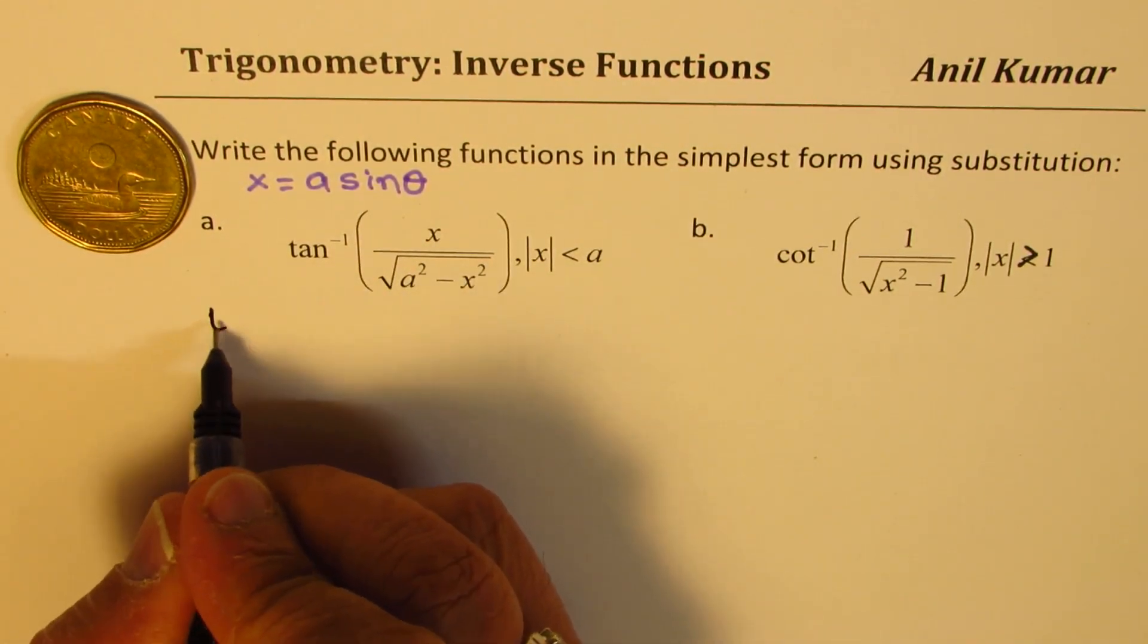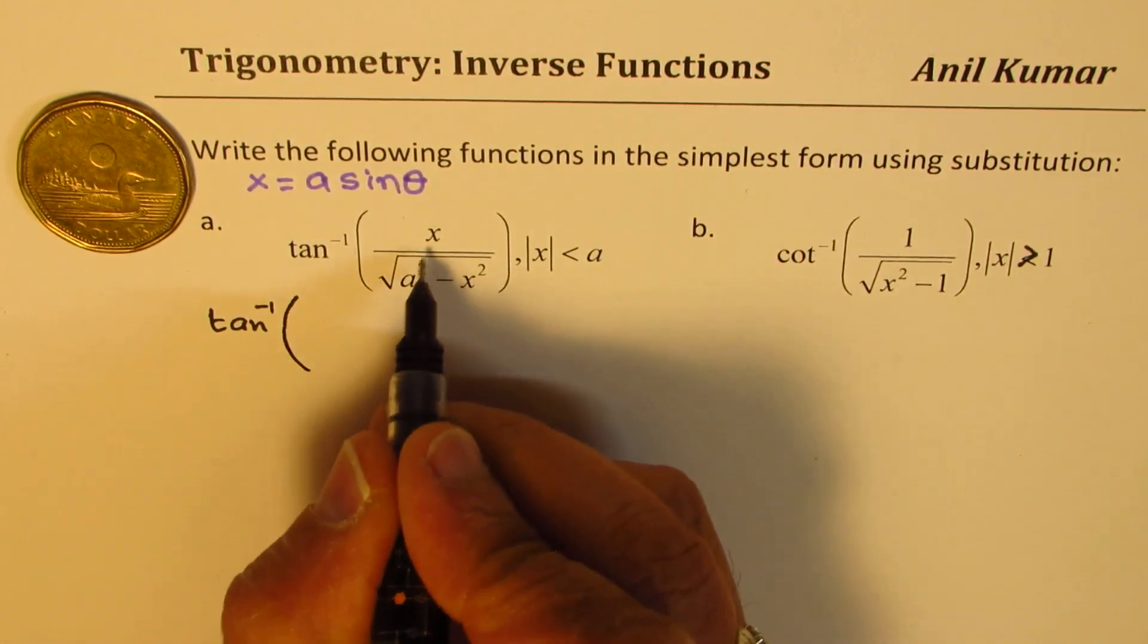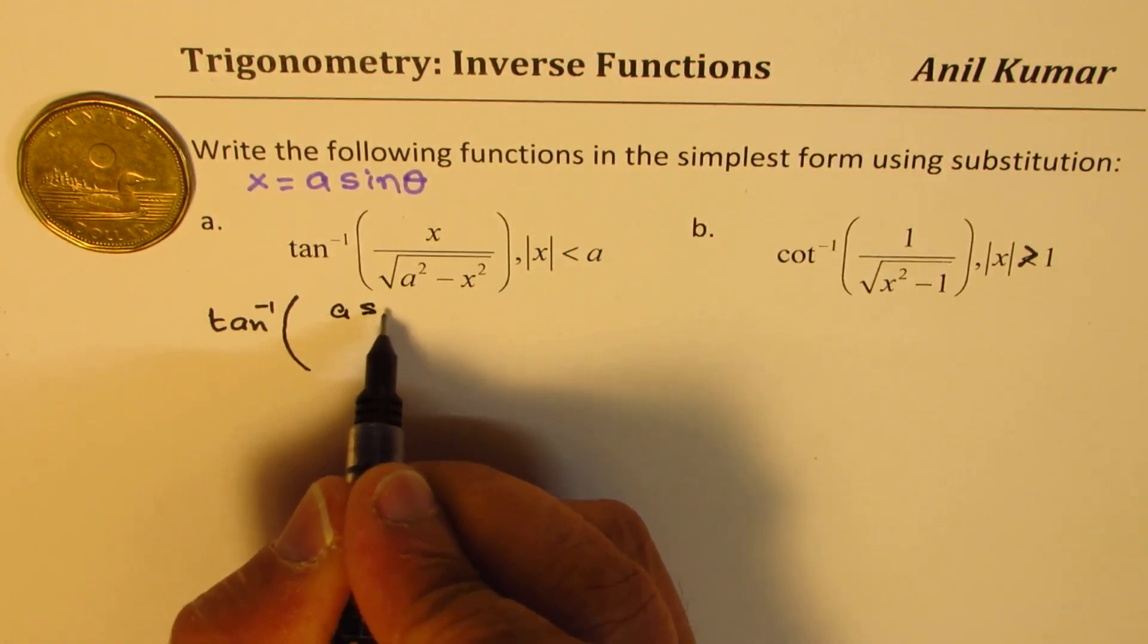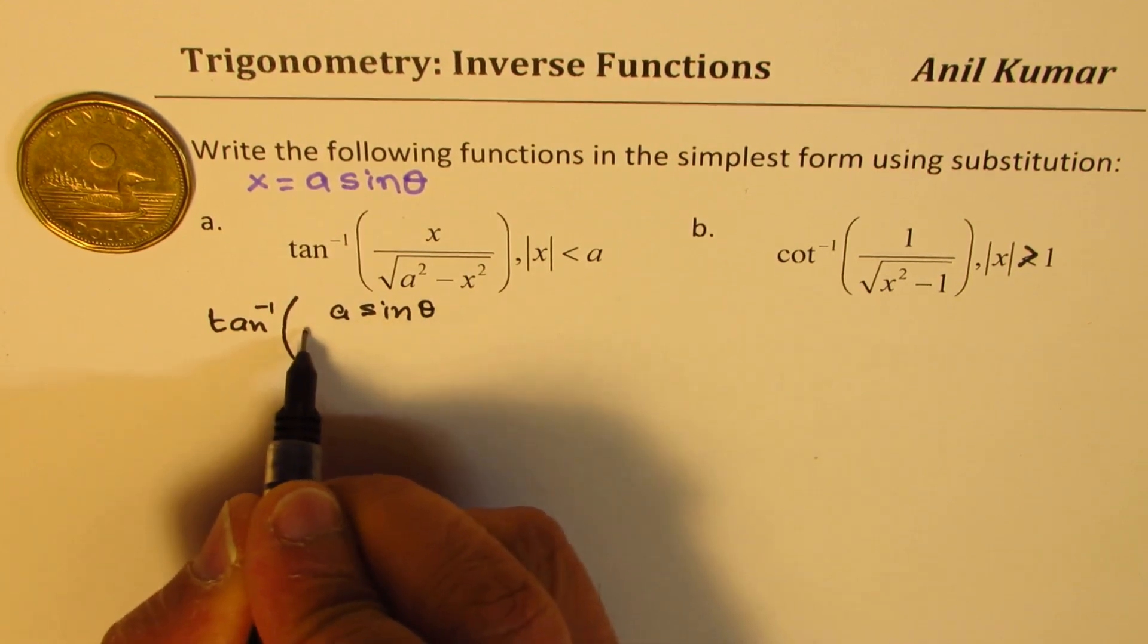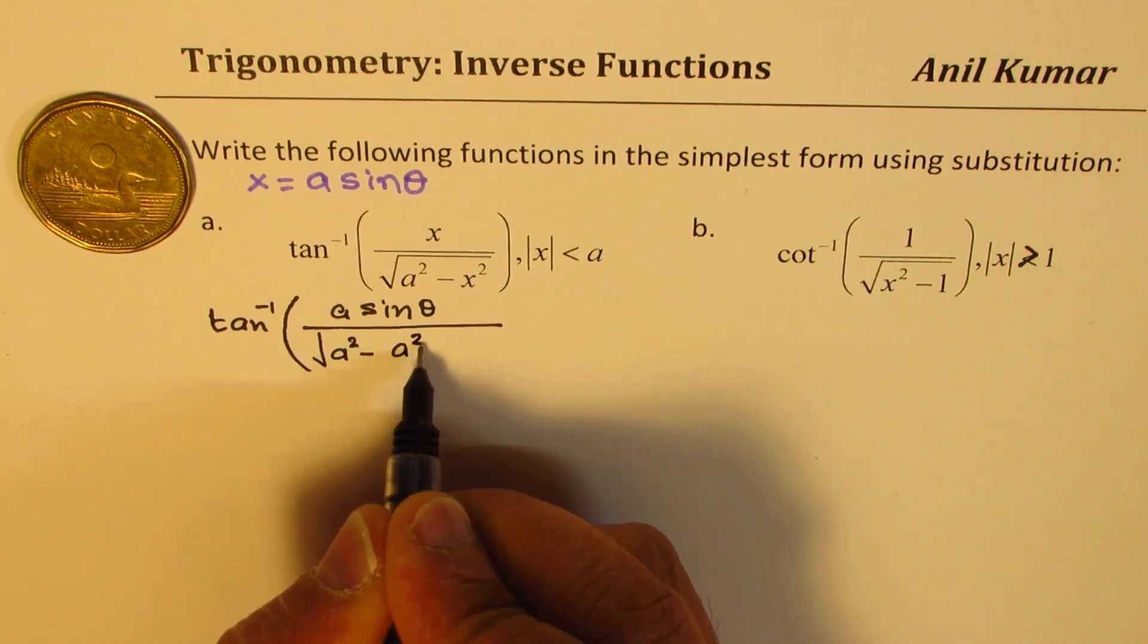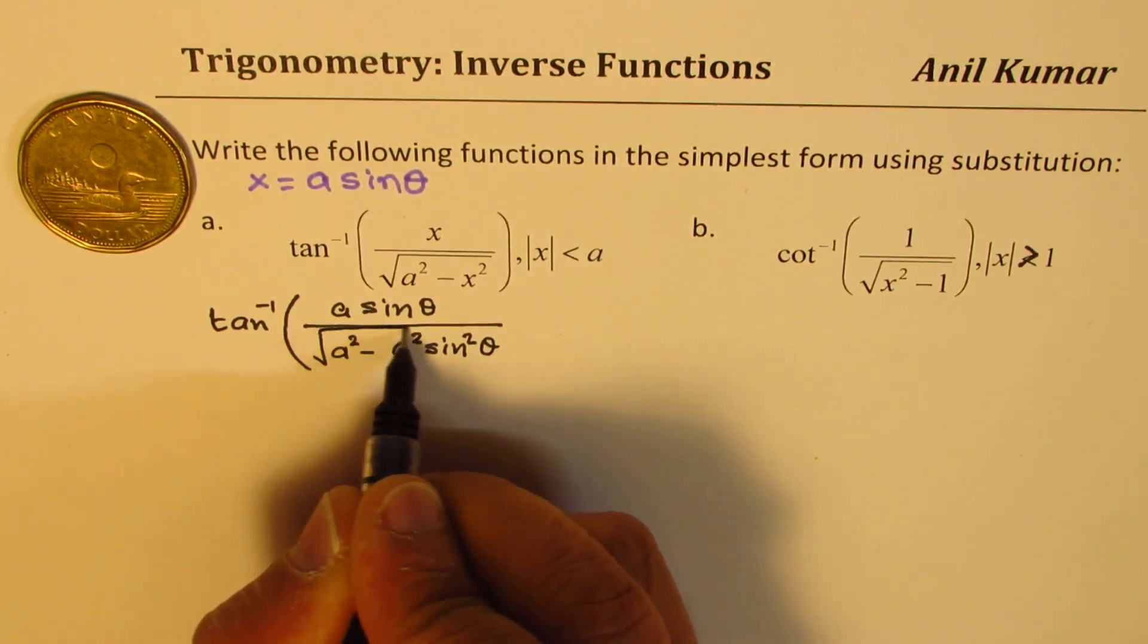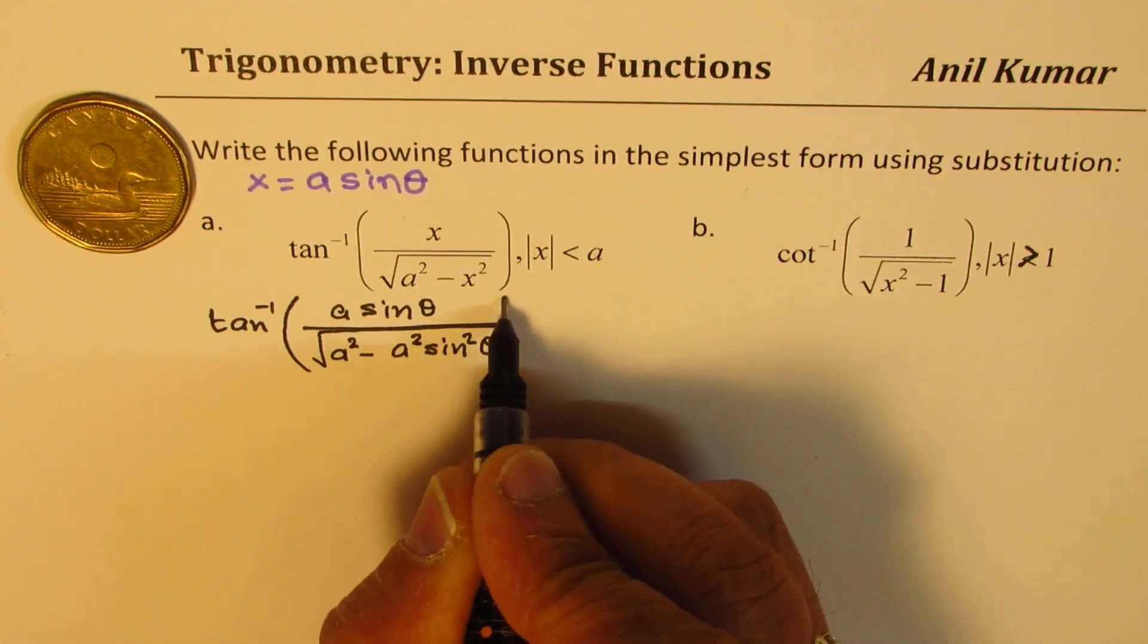Now, the question turns out to be tan inverse of, instead of x, I'm writing a sin theta. And the denominator, we have square root of a square minus a square sin square theta.